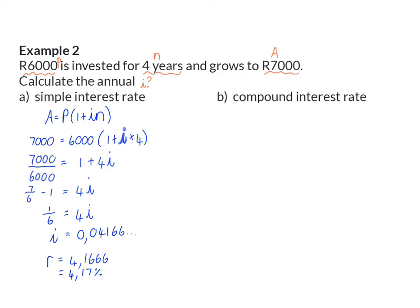In B, it is now compound interest, so I am going to work with the formula, where the n value is now in the exponent. Once again, I am going to substitute, and again, I need to solve I, that is inside the bracket. I am going to start off with the same step, and that is to get rid of the 6,000 that is multiplied to the bracket, so I am dividing by 6,000.